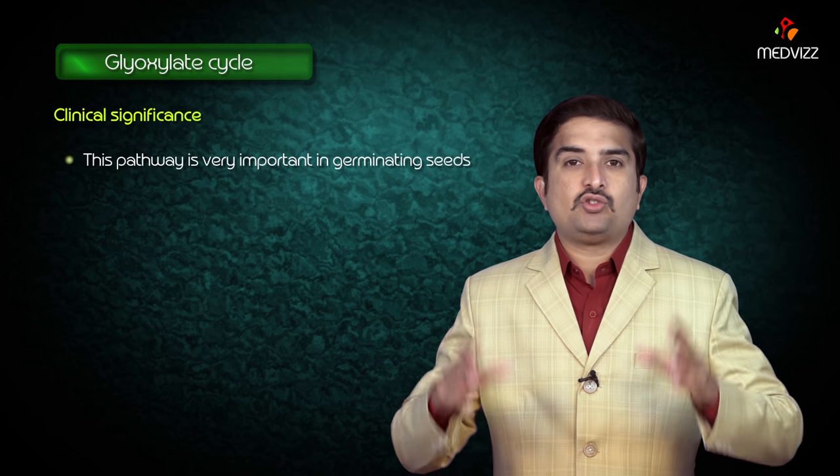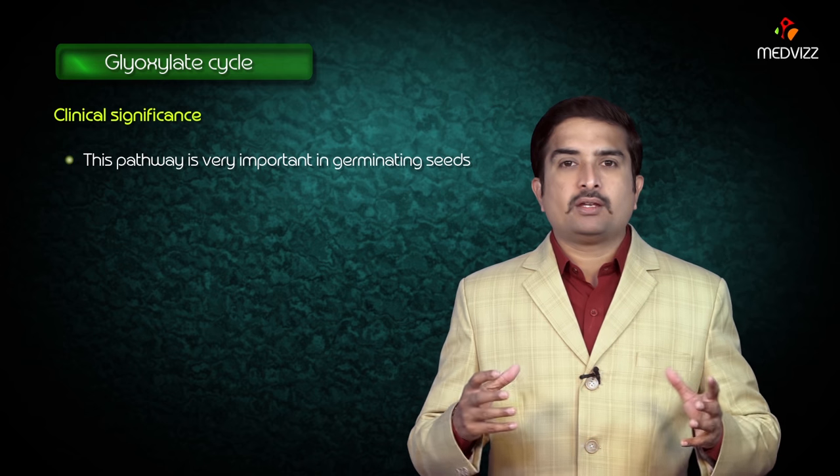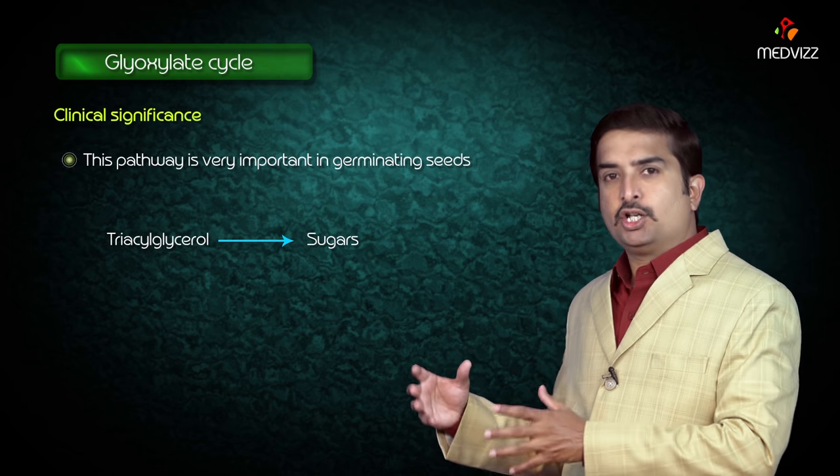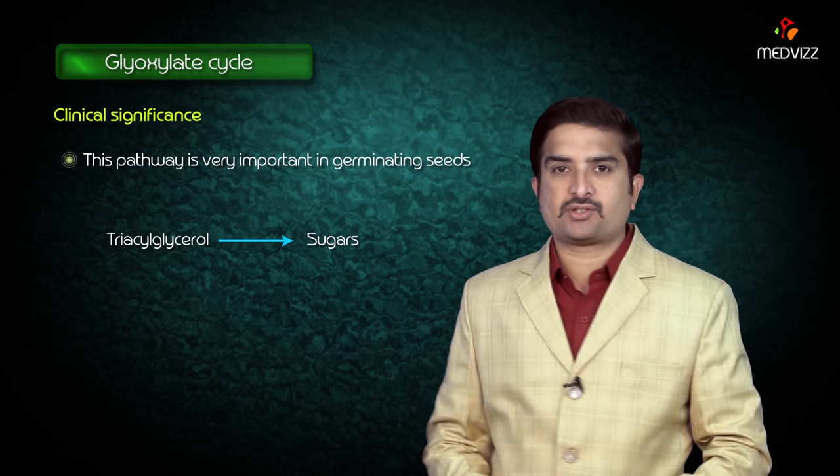This pathway is very important in germinating seeds, where the stored triacylglycerol, which is the fat, is converted to sugar to meet the energy requirements. By this, we have completed the glyoxylate cycle.